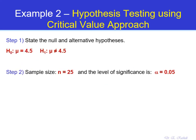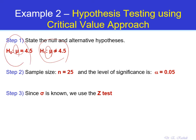The next step is to identify the sample size and significance level. We set the sample size equal to 25 and the significance level equal to 5%. The third step is to identify the test technique. Since we are talking about the average of the population, mu, and since sigma is known as given in the problem, we can use a Z test. So our technique is a Z test statistic.